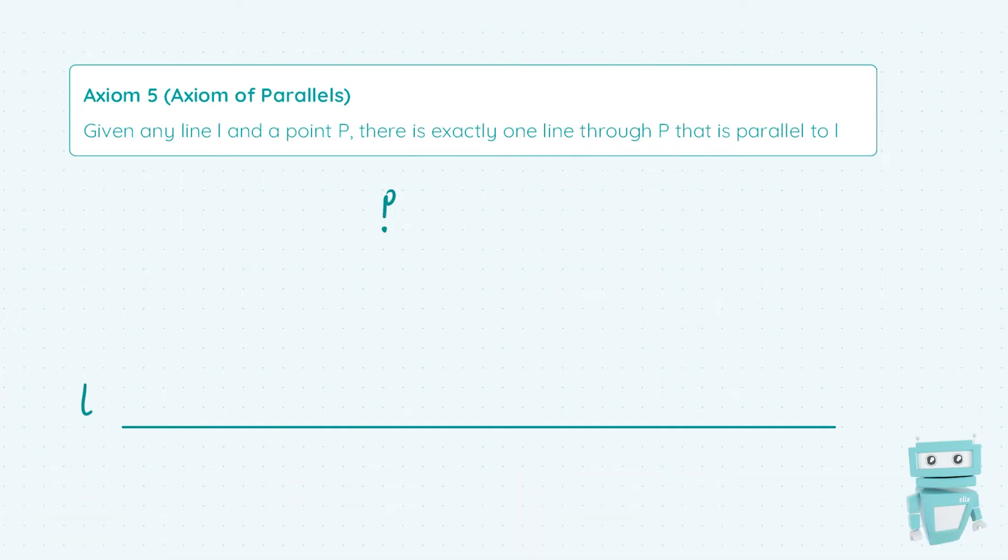This axiom states that given any line L and a point P, there's exactly one line through P that is parallel to L. So as you can see, we've got a point here P and a line L.